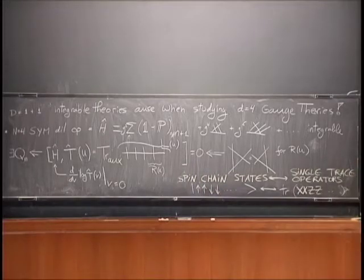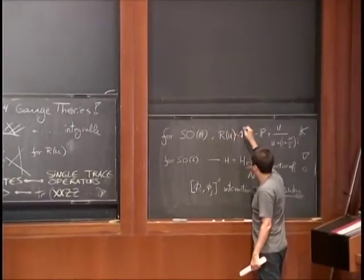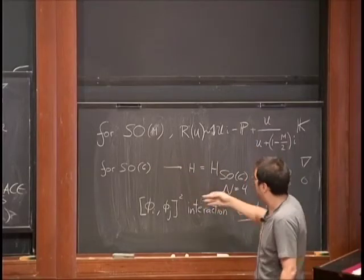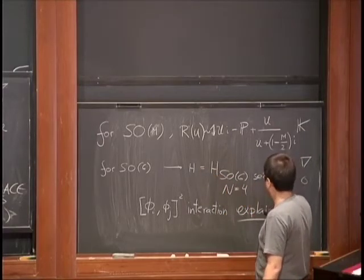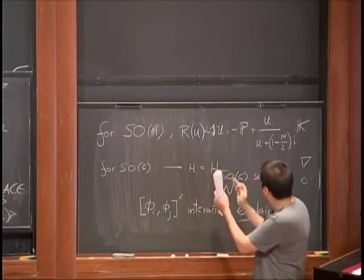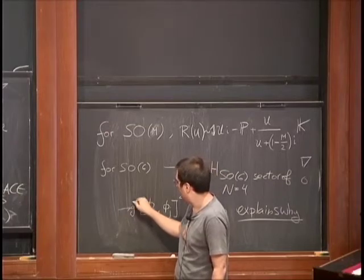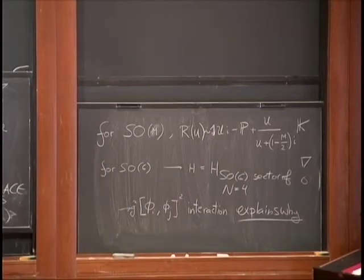Yang-Baxter fixes the form of the R-matrix. For example, for SO(M) you can have something proportional to the identity, to the permutation, and to the trace. When you impose Yang-Baxter, you fix the relative coefficient. From there, you can see what Hamiltonian follows. The Hamiltonian that follows from this construction for SO(6) is the Hamiltonian of the SO(6) sector of N=4. The reason we get the correct coefficients behind the several terms in the Hamiltonian came from the structure of the interaction with this commutator squared. Therefore, this implies that N=4, at least in this scalar sector, is integrable, and as I told you, this extends further.